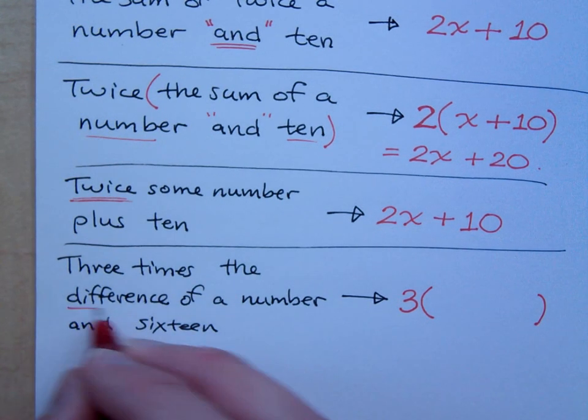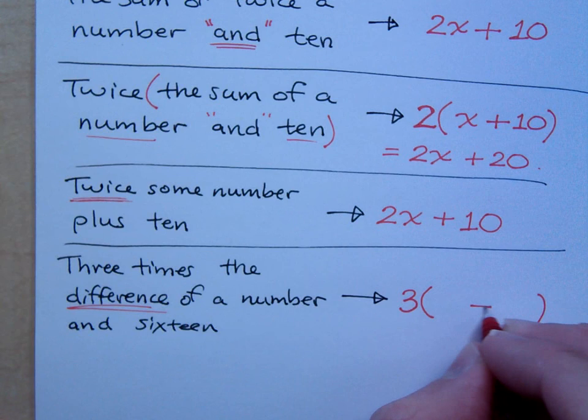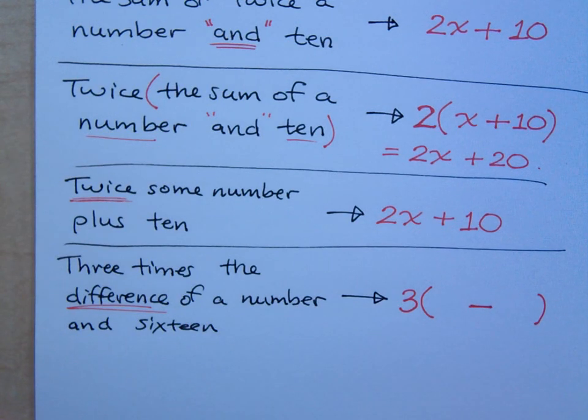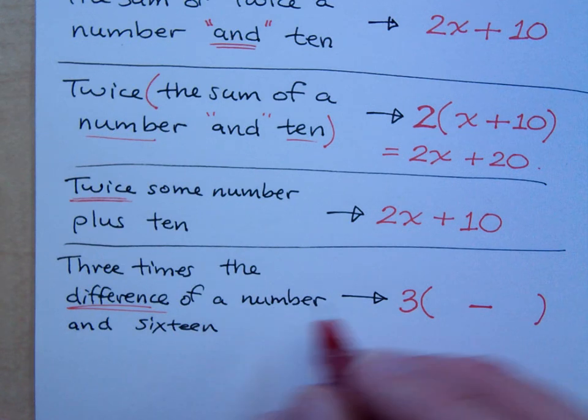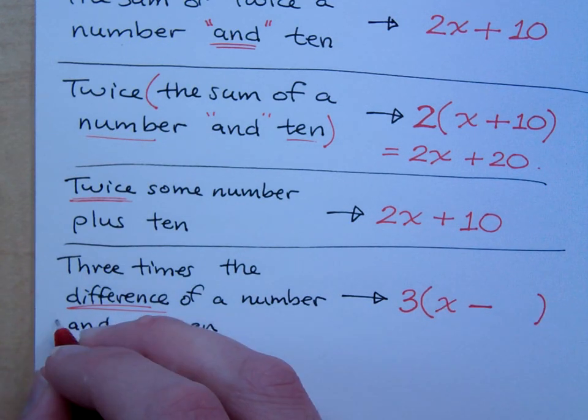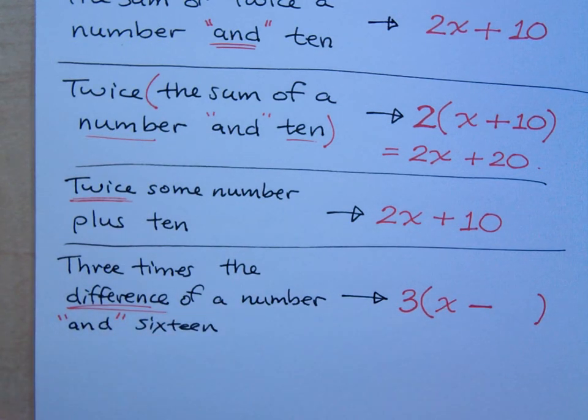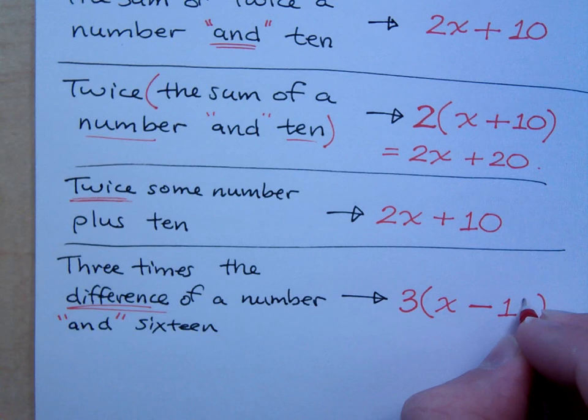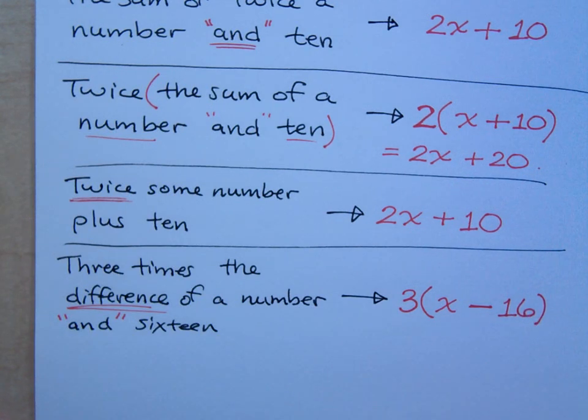It says the word difference. So it means I've got subtraction here. And what are the two pieces of my subtraction? X. A number, X. The word and signifies to us where the subtraction symbol goes, which is right here. And the other side of that is 16. So minus 16. So it's three times the difference. It's three times that group.